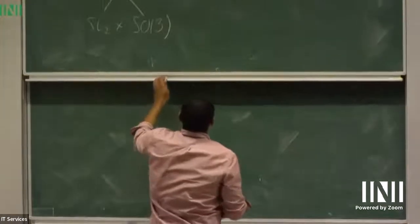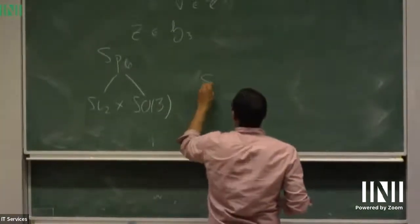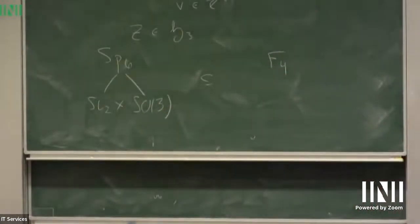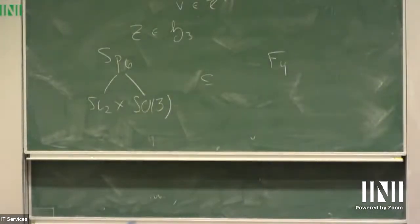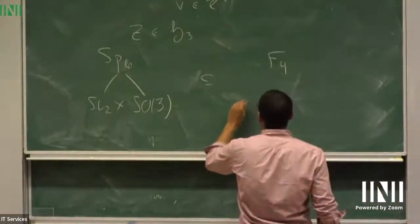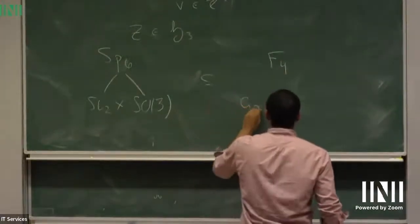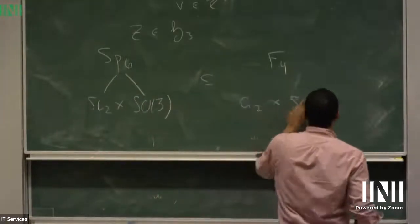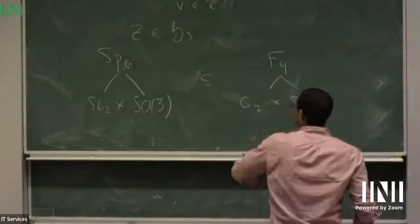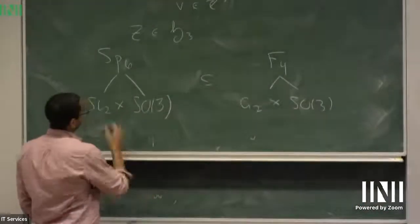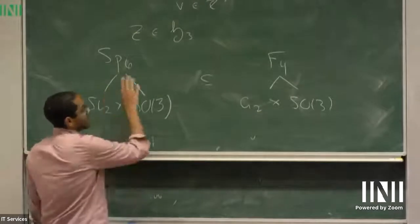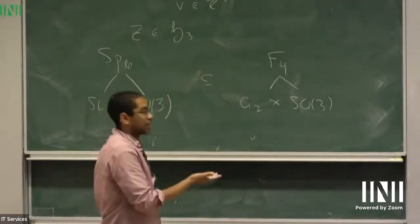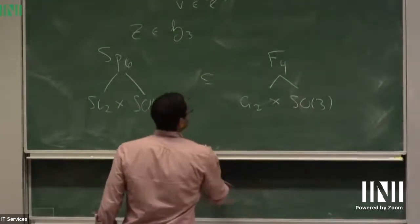It turns out that Sp6 sits inside F4 as the derived group of the Heisenberg parabolic Levi. And SO2 sits inside G2 as the derived group of the Heisenberg parabolic Levi, with centralizer the compact SO3. This is how we started the project: we looked at this diagram and said, if we can take a theta function on F4 and pull it back to G2, we ought to get something interesting, perhaps involving class numbers — some arithmetically interesting results.